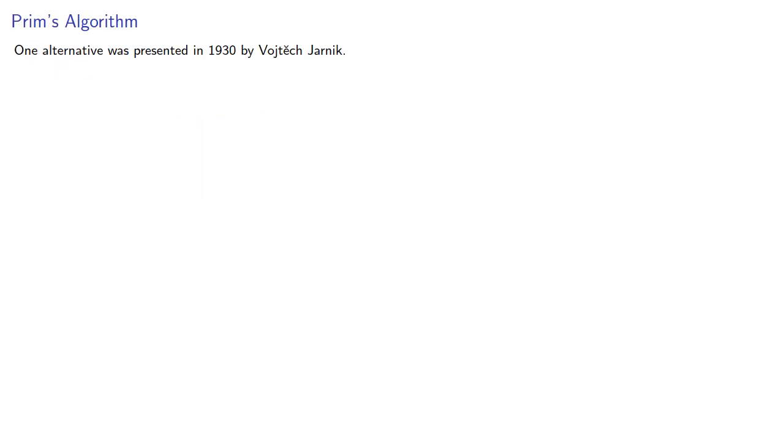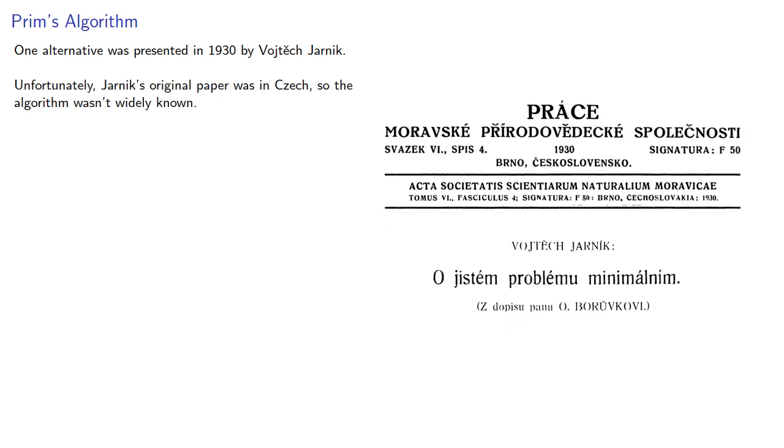One alternative was presented in 1930 by Vojtech Jarnik. Unfortunately, Jarnik's original paper was in Czech, so the algorithm wasn't widely known. It would be invented independently by Robert Prim in 1957, so it's usually called Prim's algorithm.